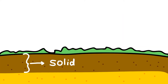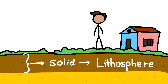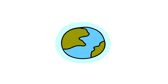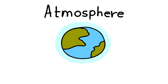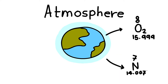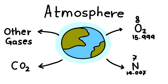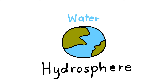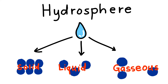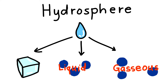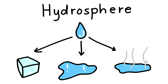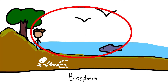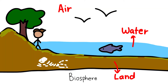The solid portion of the Earth on which we live is called the lithosphere. The gaseous layers that surround the Earth is the atmosphere, where oxygen, nitrogen, carbon dioxide and other gases are found. Water covers a very big area of the Earth's surface and this area is called the hydrosphere. The hydrosphere comprises water in all its forms — ice, water and water vapor. The biosphere is the narrow zone where we find land, water and air together, which contains all forms of life.